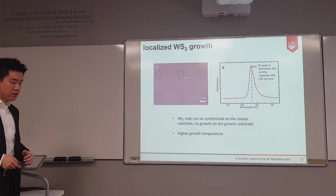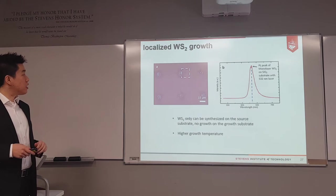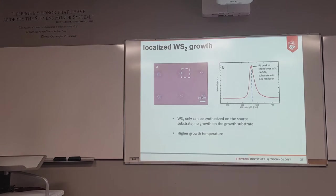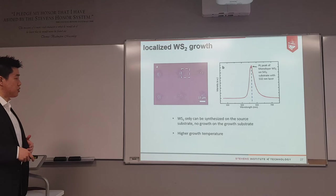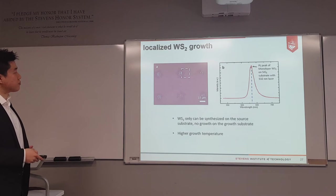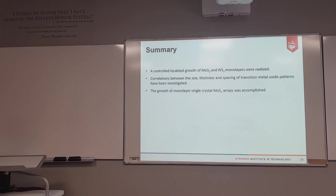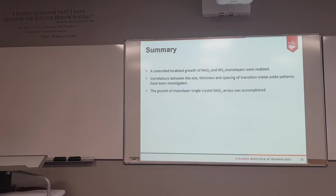This contact growth method is universal for other TMDs like WS₂ and WSe₂. I've already realized location-specific growth of WS₂. However, there are problems for WS₂ — currently it can only be realized on the source substrate, not the growth substrate, because the synthesis temperature of WS₂ is much higher than MoS₂, making molecules more active and easily removed by carrier gases. In summary: controlled localized growth of WS₂ and MoS₂ has been realized; the correlation between size, thickness, and spacing of transition metal oxides has been investigated; and single crystal monolayer growth was accomplished in some substrate areas.